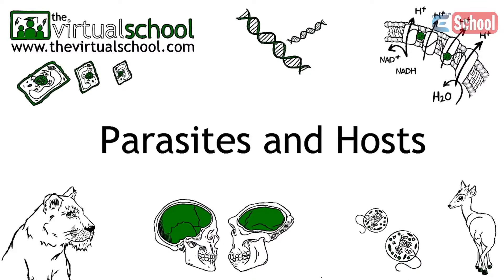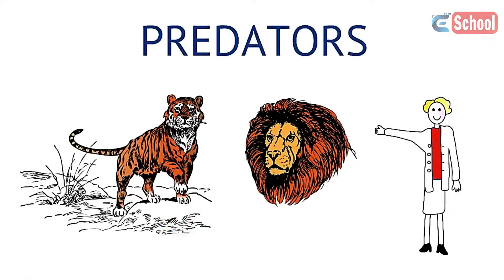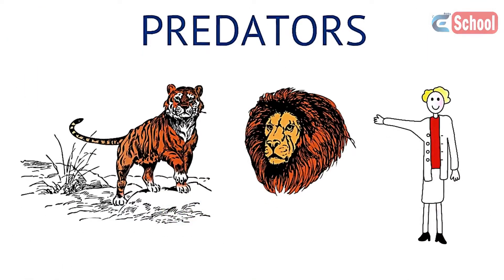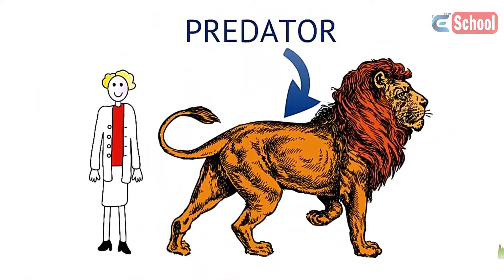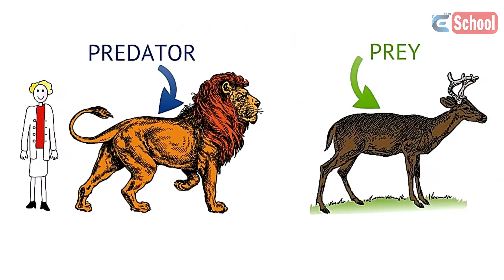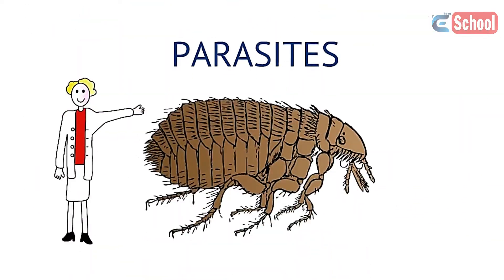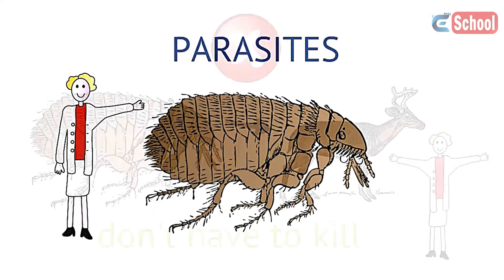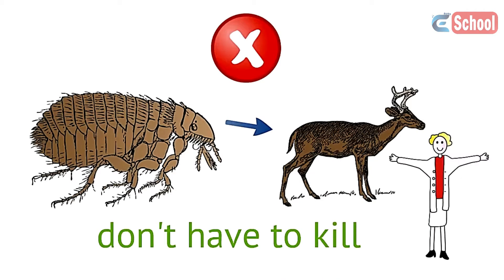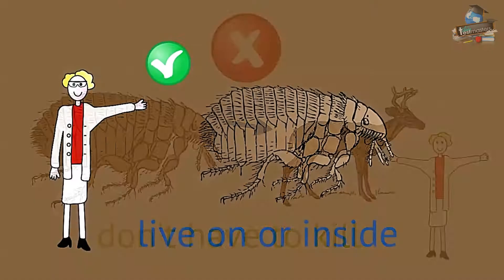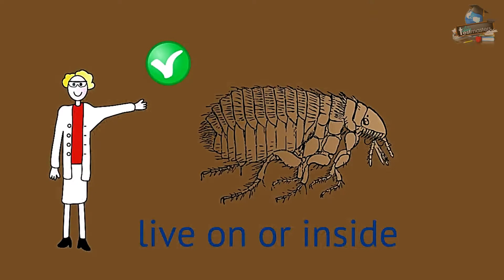Some animals are called predators — they hunt and kill other animals for food, and the animals that are hunted and eaten by predators are called prey. But what about parasites? Parasites don't have to kill an animal in order to feed off it. In fact, parasites live on or inside a living animal, harming it but not killing it immediately.